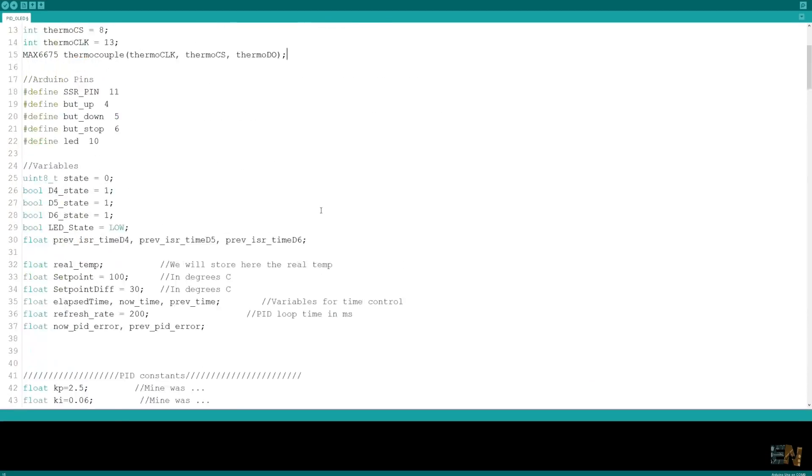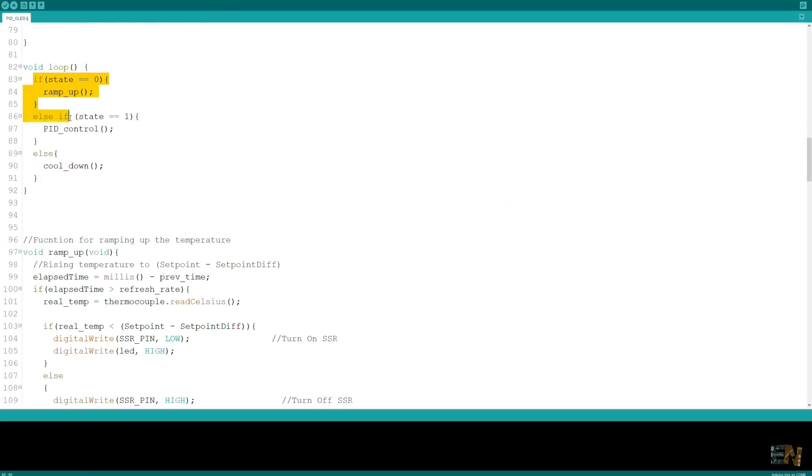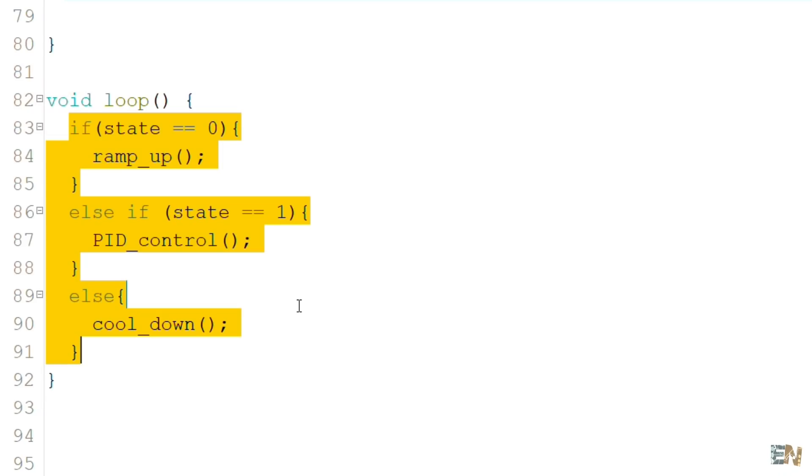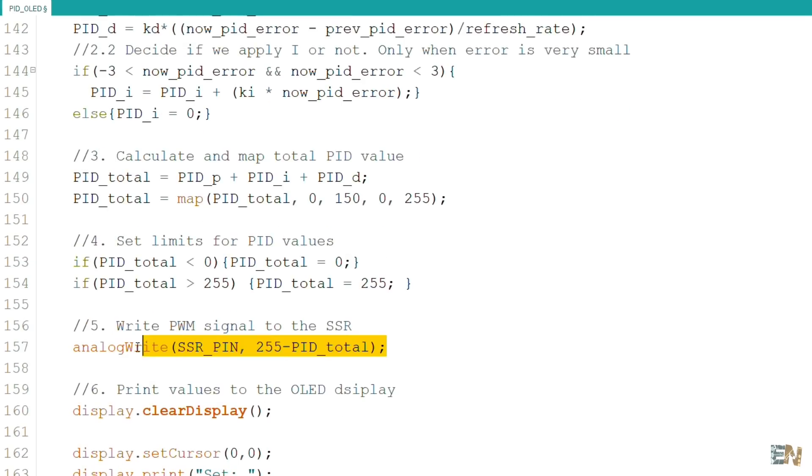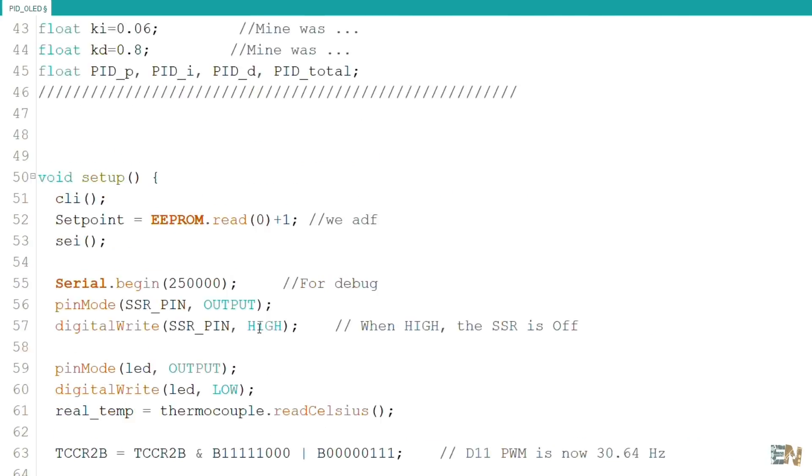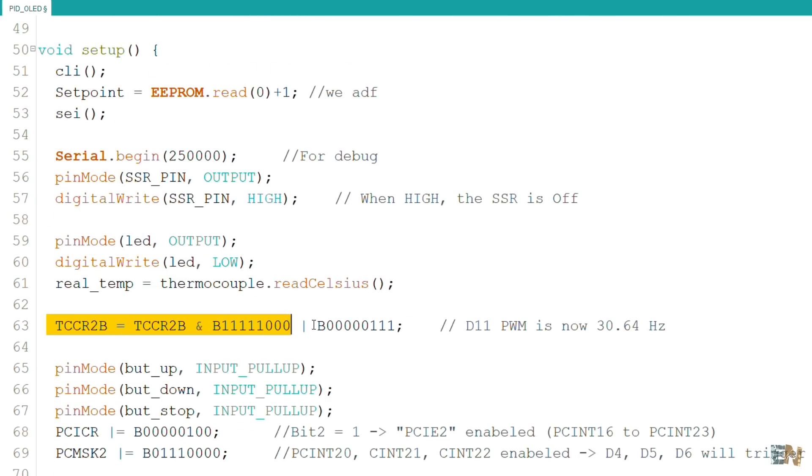So this is the code for the controller. We have three main loops. When the heater is cold and we just turn it on, we have the ramp up loop. Here the SSR will be fully turned on. Then when we get close to the desired value, we start some sort of PID control. That will change the pulses applied to the SSR. The frequency of these pulses must be very low because the AC signal is only 50 or 60Hz depending on your country.